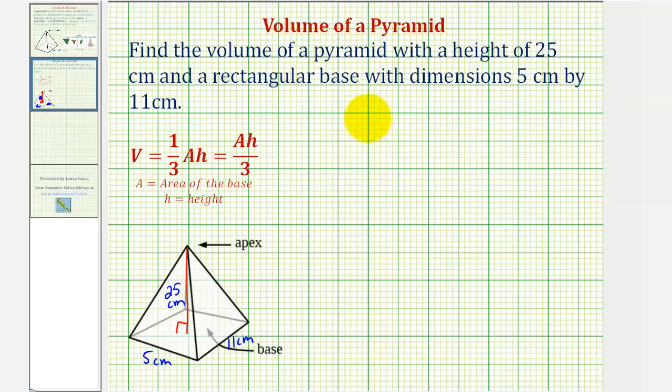Therefore, the volume equals the area of the base times the height divided by 3. Let's begin by determining A, the area of the base. Our base is a rectangle, so capital A equals length times width, or in our case, 5 centimeters times 11 centimeters.